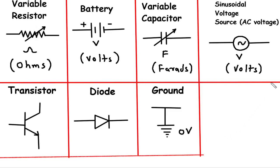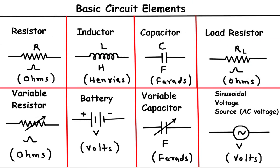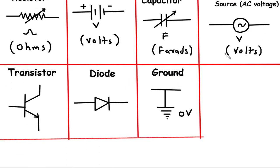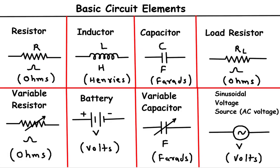Conclusion. And there you have it. We've covered some of the fundamental basic circuit elements, including resistors, inductors, capacitors, load resistors, variable resistors, batteries, variable capacitors, AC voltage sources, transistors, diodes, and ground symbols. Understanding these components and their functions is essential for anyone interested in electronics and circuit design. We hope this video has provided you with a solid foundation to explore more complex circuits in the future. Thank you for watching and stay tuned for more exciting videos on electronics and electrical engineering.